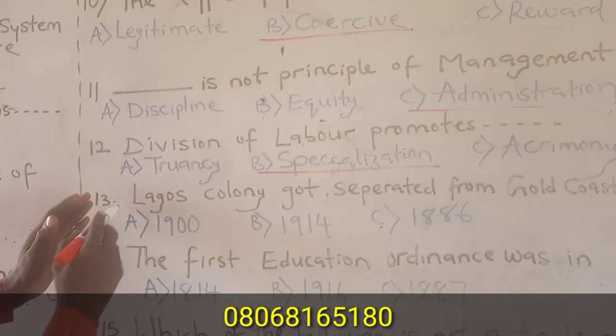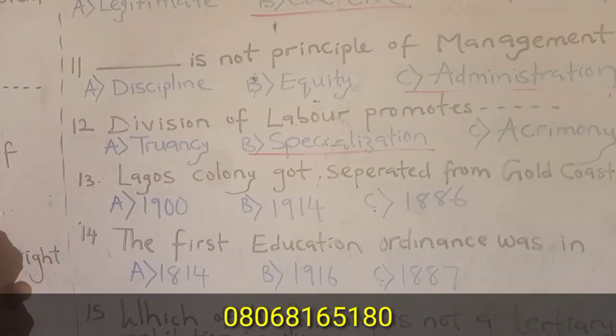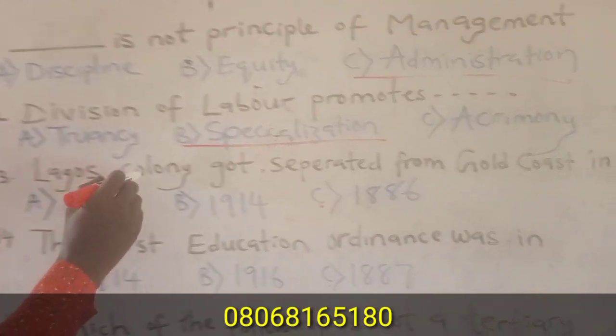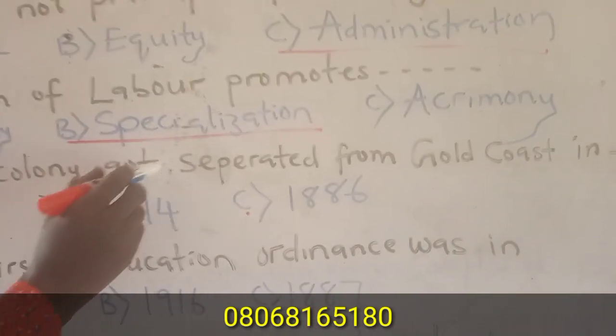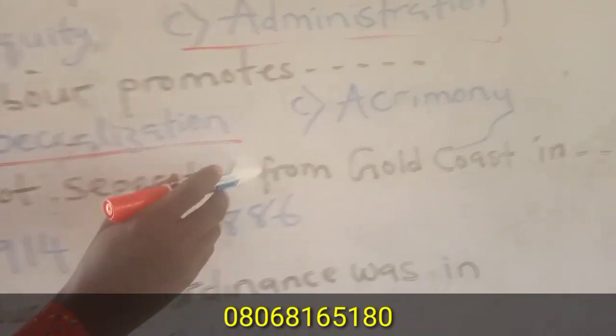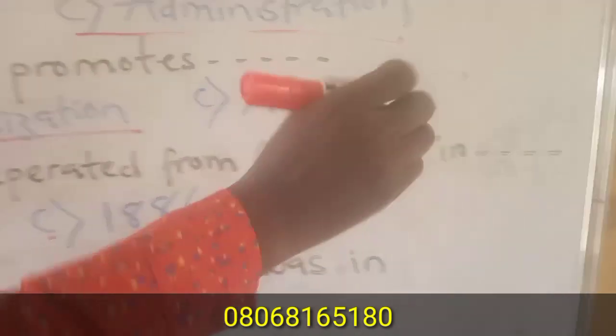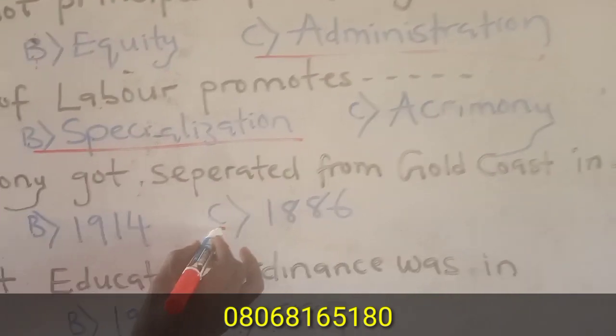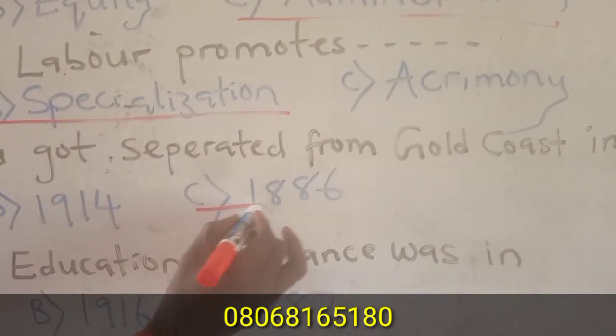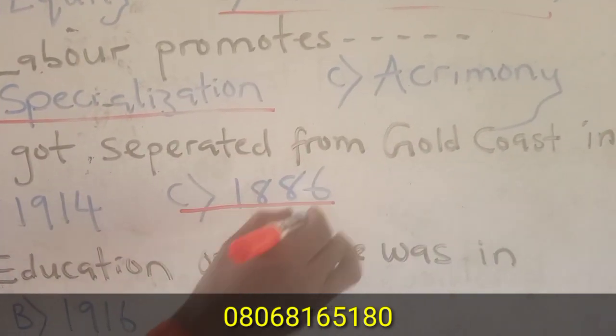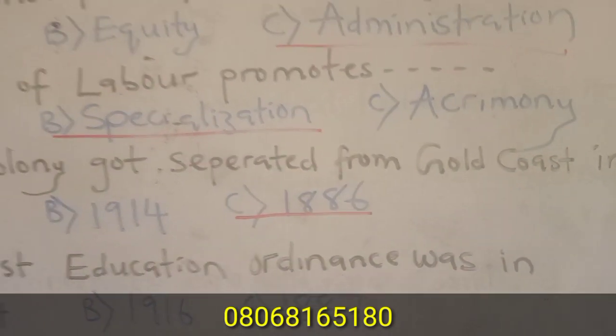Question thirteen: Lagos colony got separated from Gold Coast in the year 1886.